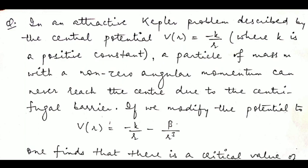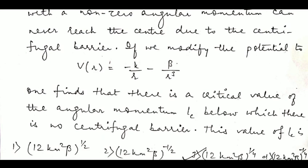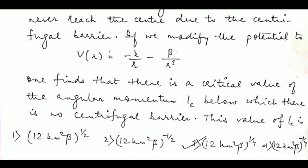...can never reach the center due to the centrifugal barrier. If we modify the potential to V(R) = -K/R - β/R³, one finds there is a critical value of angular momentum LC below which there is no centrifugal barrier.